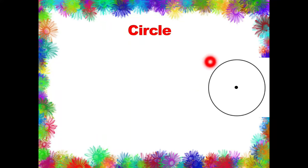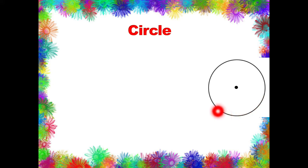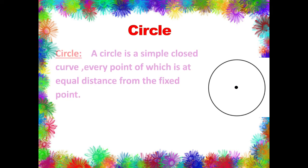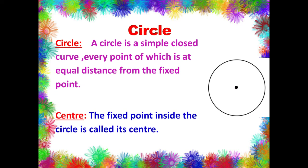Let us learn about circles and their various parts. Firstly, what is a circle? A circle is a simple closed curve. Any point on it is at equal distance from the fixed point. This fixed point lies inside the circle and is called the center. We can define a circle as a simple closed curve, every point of which is at equal distance from the fixed point. This fixed point O is called the center of the circle.